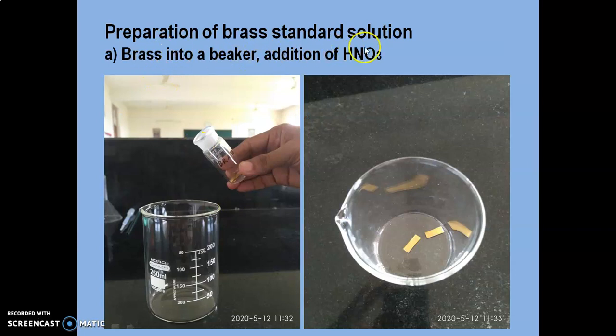Preparation of brass standard solution. The brass strip will be given in the weighing bottle. It has to be transferred to a clean beaker. The brass will have copper in oxidation number 0. Upon the addition of HNO3, it is getting oxidized. Copper will be getting oxidized to Cu2+, and it forms cupric nitrate.